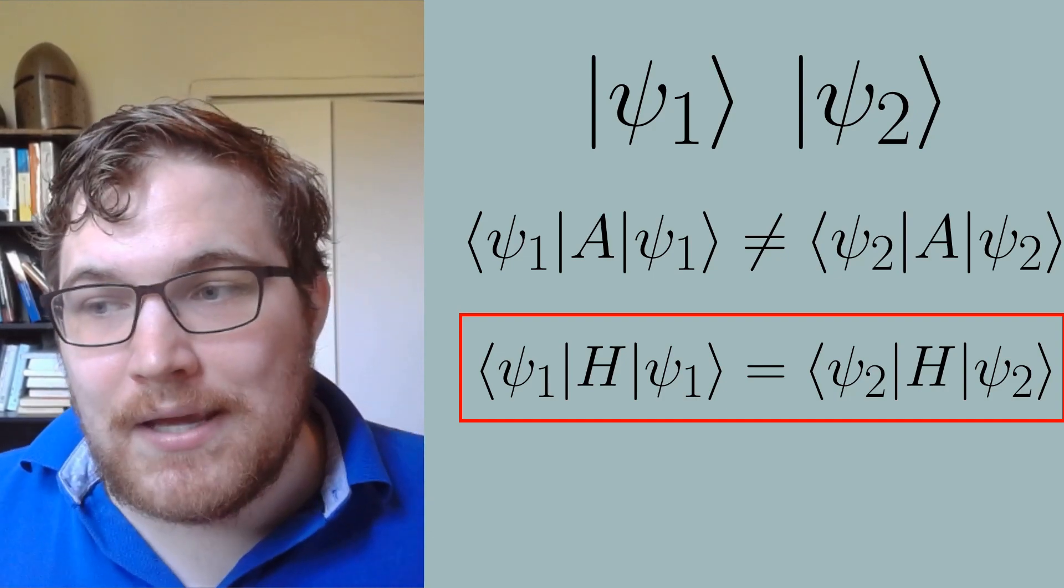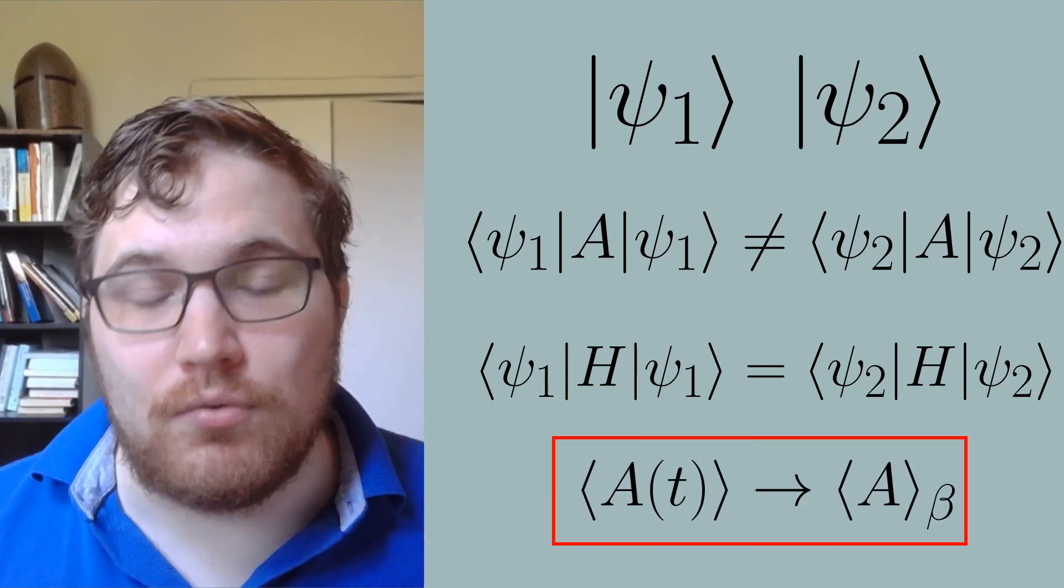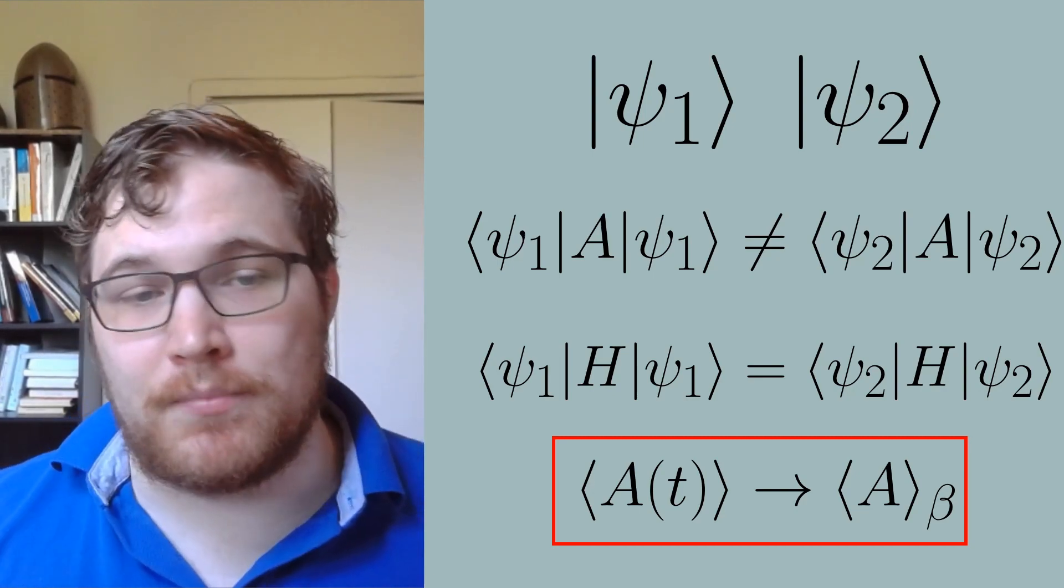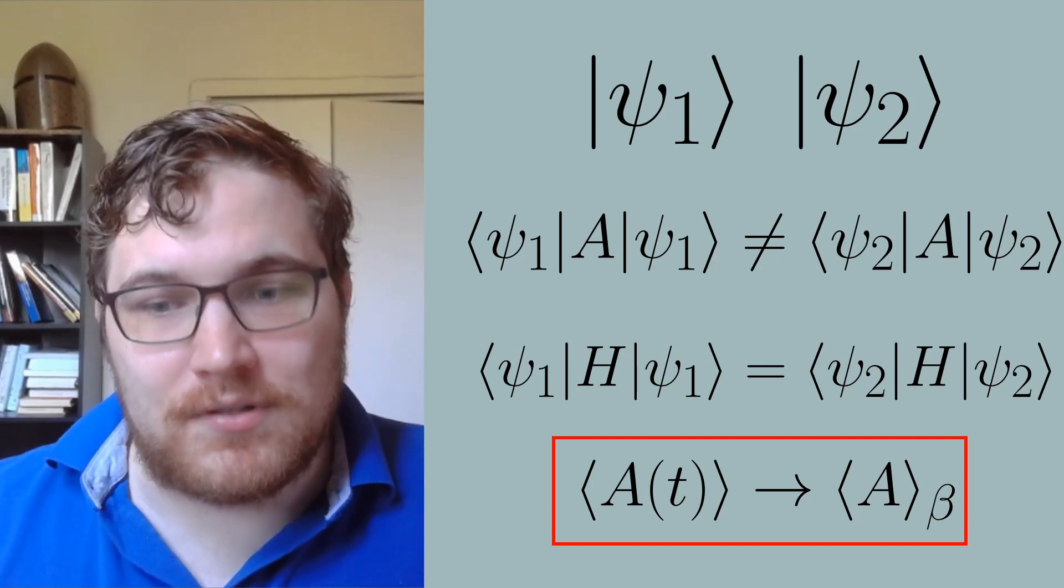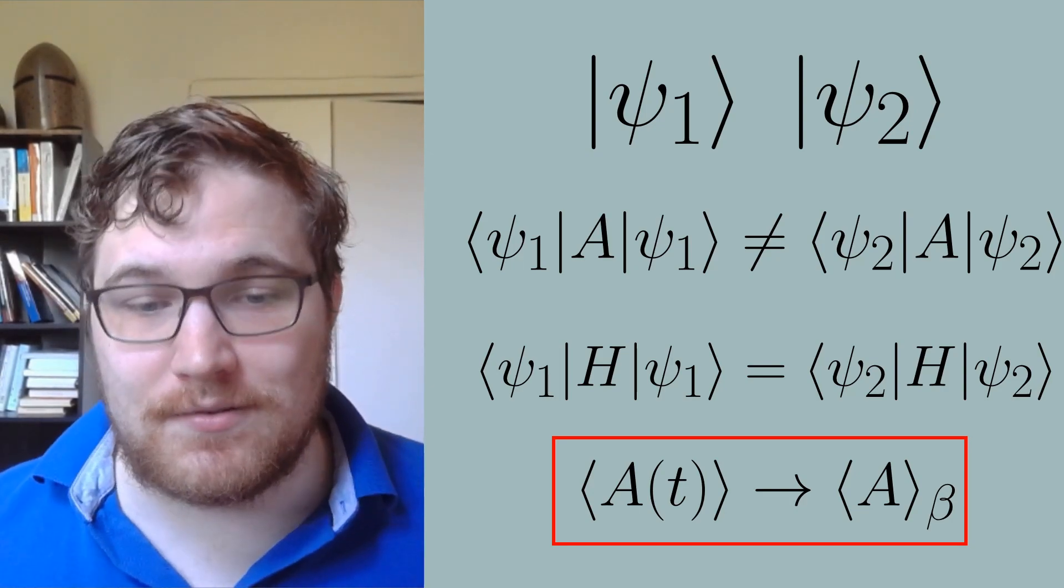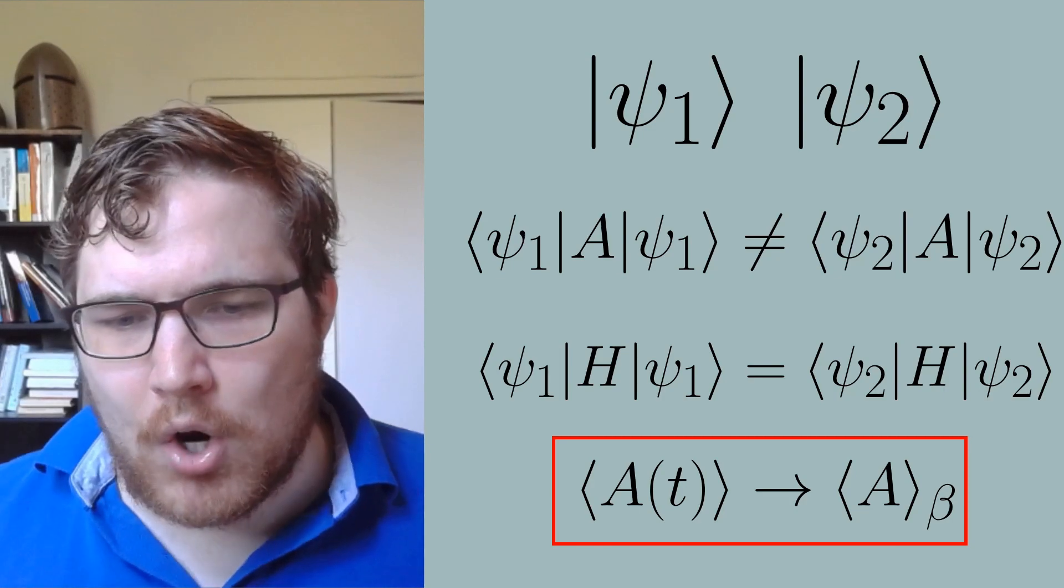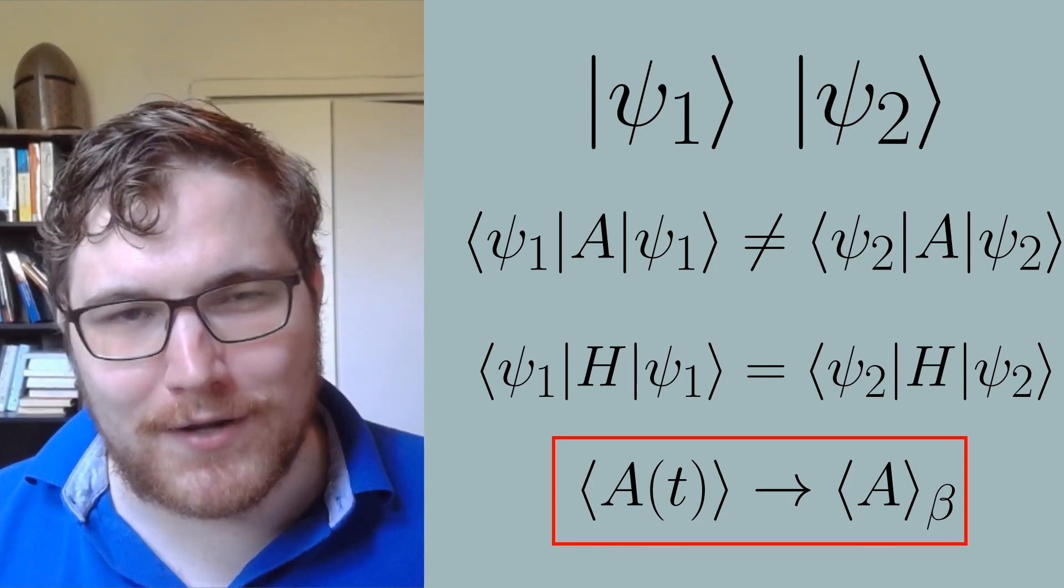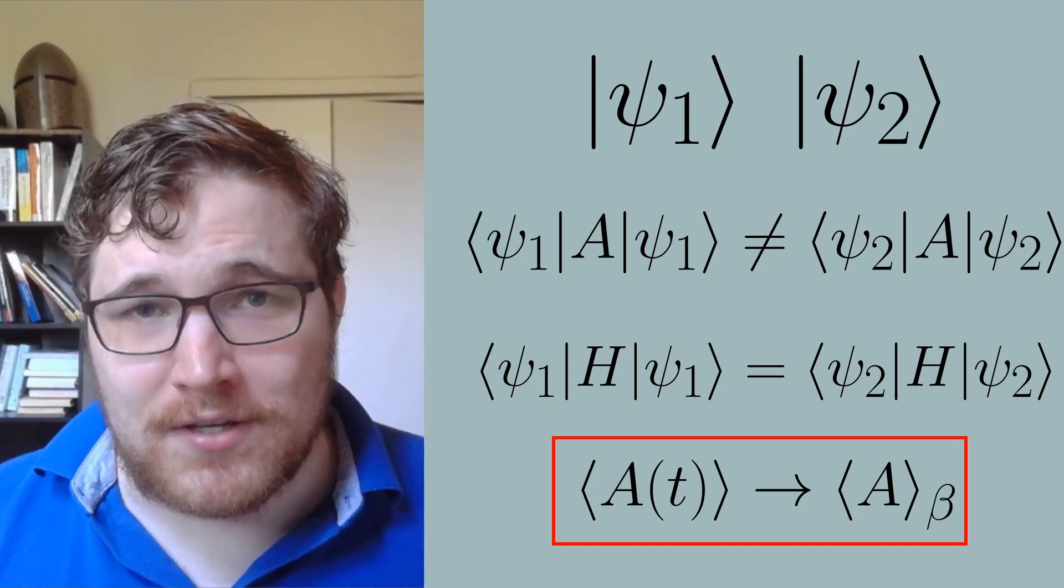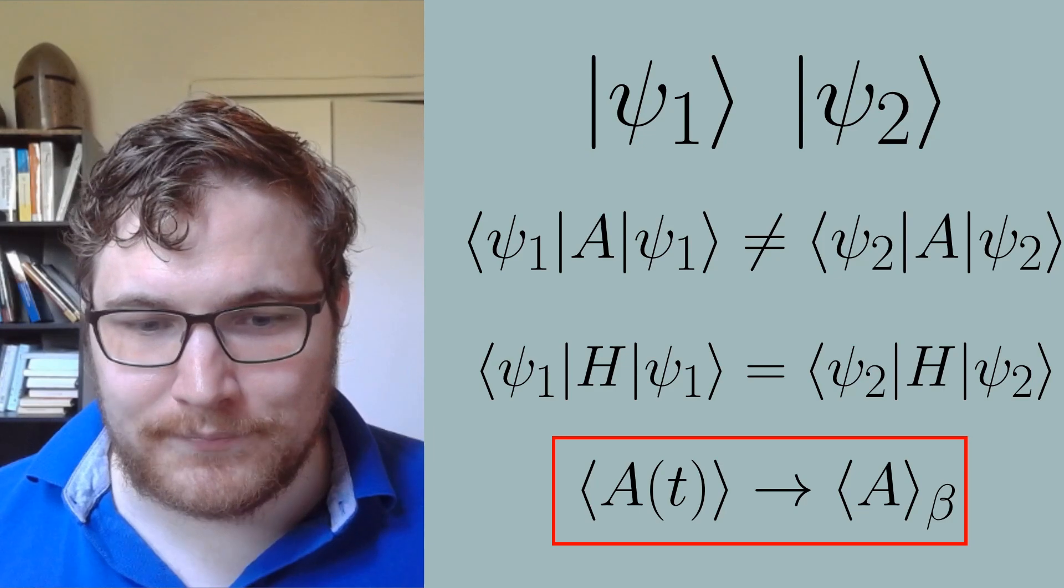Then if we are in a system that thermalizes its subsystems, we expect both ψ₁ and ψ₂ to evolve to a point where the expectation value of A agrees with the expectation value of statistical mechanics, which is set by the energy of the system. Here the beta subscript on the expectation value is just the inverse temperature. And since both states have identical energies, the temperature is identical for both states. So they go to an equilibrium that for the observable A looks identical. Are we somehow losing information in this process? It certainly looks that way, right?